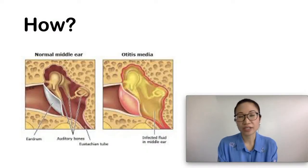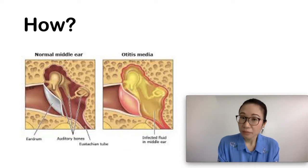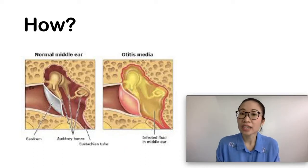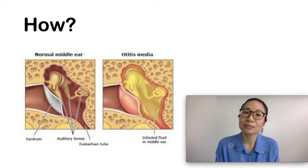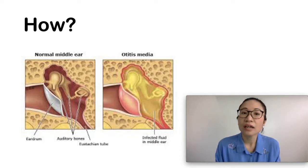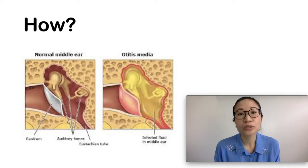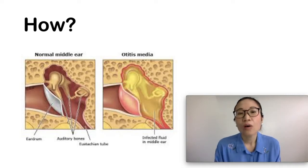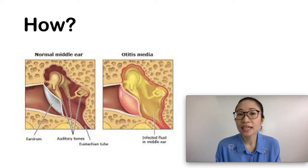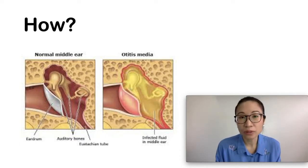How do you get ear infections? Middle ear infections happen because of swelling in one or both of the eustachian tubes. The eustachian tube connects the middle ear to the back of the throat, and mucus drains fluid from the middle ear to the back of the throat. When you get a cold, allergies, reflux, or a throat infection, this can induce swelling and therefore block drainage of the mucus.